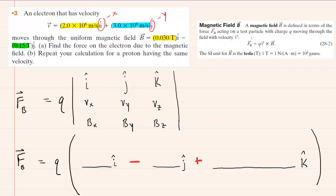We've learned in this chapter that to calculate the magnetic force on a charged particle moving through a magnetic field with a particular velocity, we use the following equation. We take the charge and multiply it by a cross product between the velocity of the charged particle and the magnetic field. The most challenging aspect is determining the cross product, and we're going to work through that now.